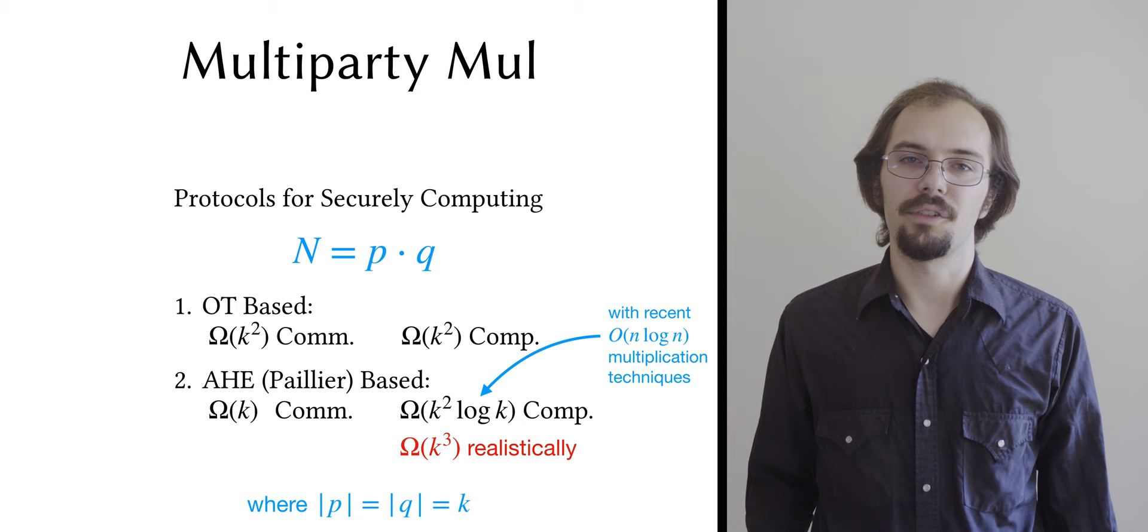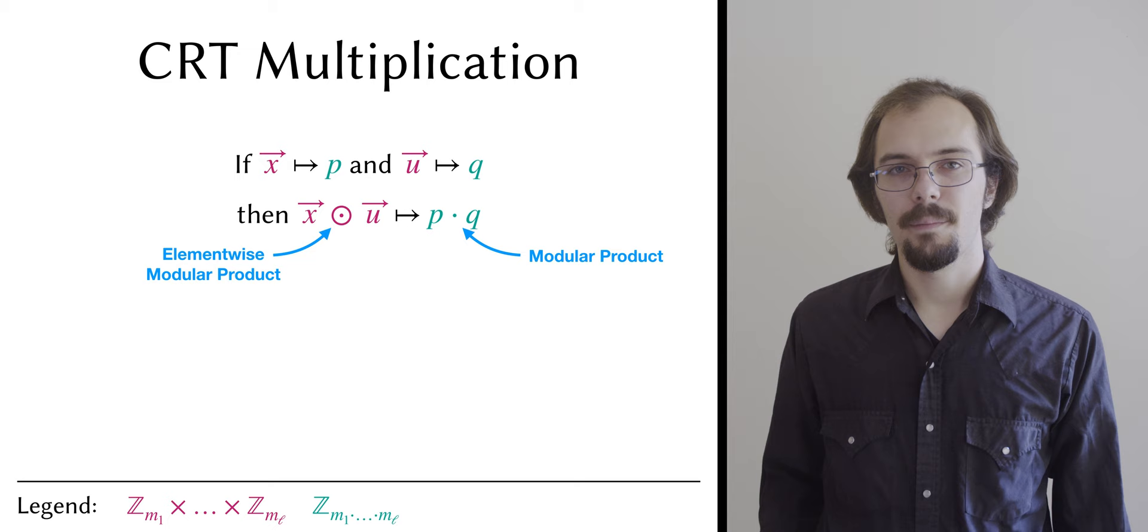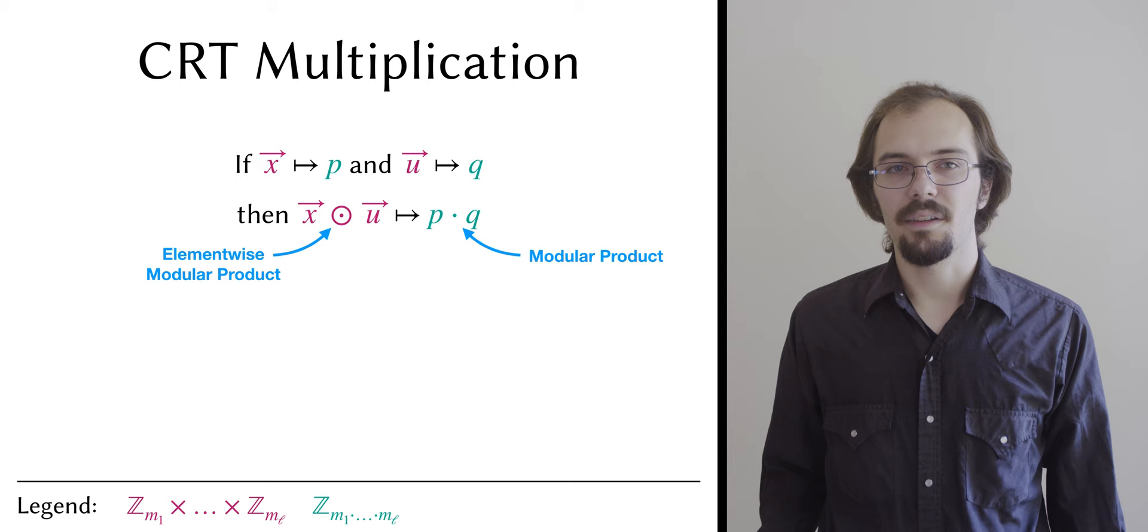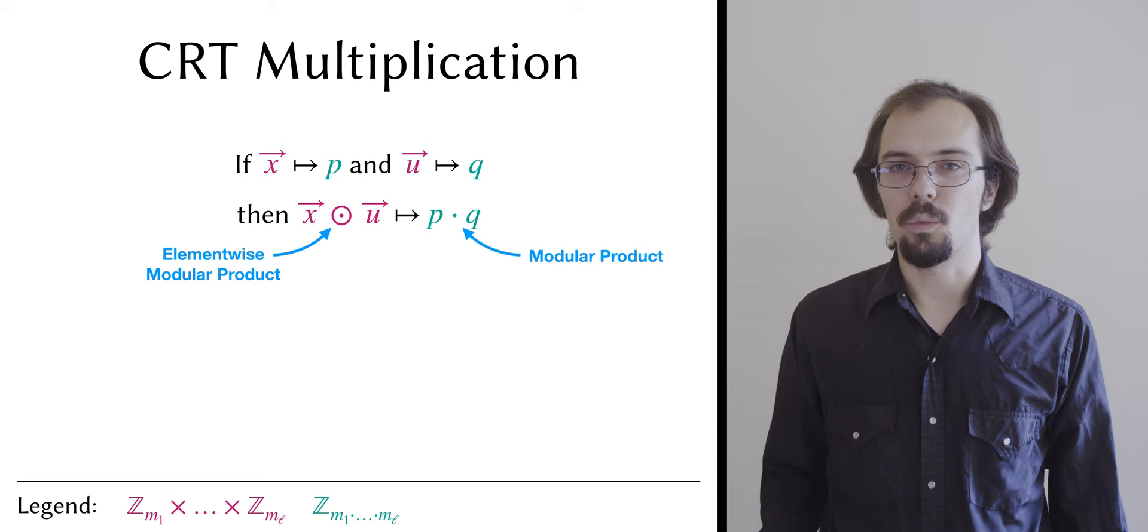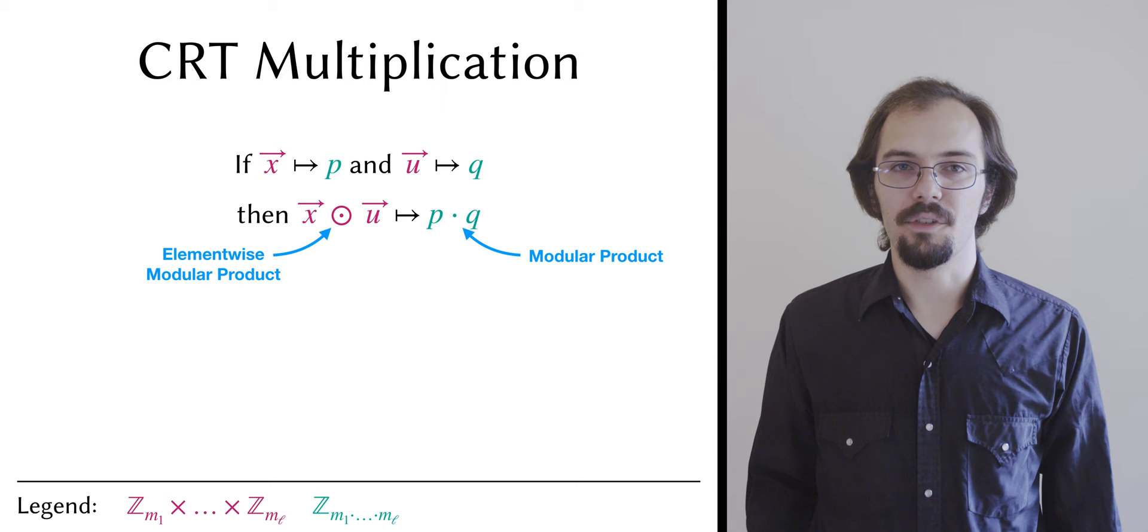Once again, consider the single-party case. We observe that if we take two CRT form values, x and u, defined with respect to the same primordial vector m of length L, then the product of their corresponding standard form values p and q modulo the Lth primordial number corresponds to the element-wise modular product of x and u. Here, I'm using the circle dot to represent element-wise multiplication.